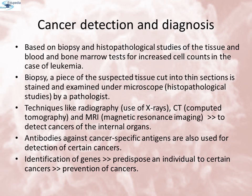Early detection of cancer is essential as it allows the disease to be treated successfully in many cases. Cancer detection is based on biopsy and histopathological studies of the tissue, and blood and bone marrow tests for increased cell counts in the case of leukemia. In biopsy, a piece of suspected tissue is cut into thin sections, stained and examined under a microscope by a pathologist. Techniques like radiography, CT (computer tomography), and MRI (magnetic resonance imaging) are very useful to detect cancers of the internal organs. Computer tomography uses X-rays to generate a 3-dimensional image of the internal structures. MRI uses strong magnetic fields and non-ionizing radiation to accurately detect pathological and physiological changes in the living tissues.